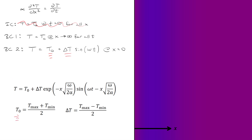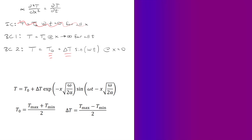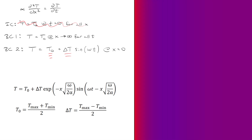The oscillation is about the average temperature between maximum and minimum, with delta-T being the difference divided by two. As x goes to infinity, e to the negative infinity is zero, leaving T equal to T-naught. At x equals zero, the temperature oscillates sinusoidally per the boundary condition. In the simulation, red is hottest, blue is coldest, and purple is midway. We see the oscillatory surface temperature, and deeper into the solid the temperature becomes more uniform, approaching the constant T-naught at the right edge.